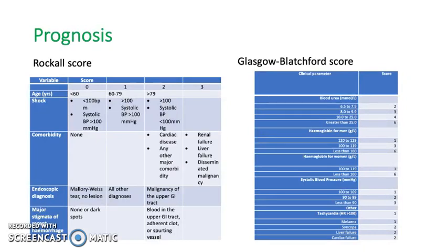For prognosis, there are two scoring systems: the Rockall score and the Glasgow Blatchford score. The Glasgow Blatchford score requires blood urea, haemoglobin, blood pressure, and other factors such as tachycardia, melaena, syncope, liver failure, and cardiac failure — it can be used once the patient is admitted without requiring endoscopy. The Rockall score has five requirements: age, shock, comorbidity, endoscopic diagnosis, and major stigmata of recent haemorrhage — therefore it requires endoscopy to assess severity.